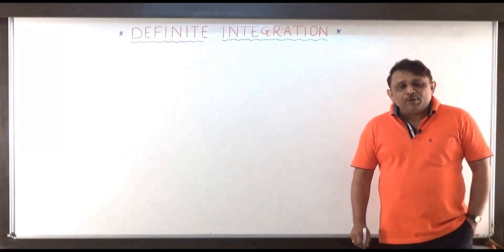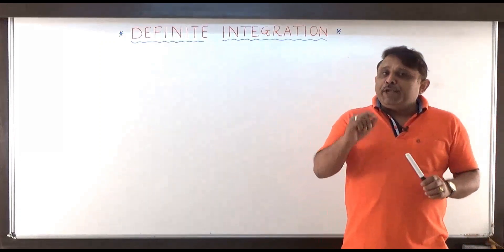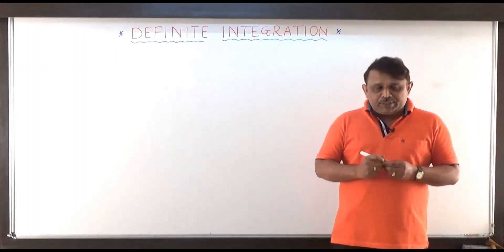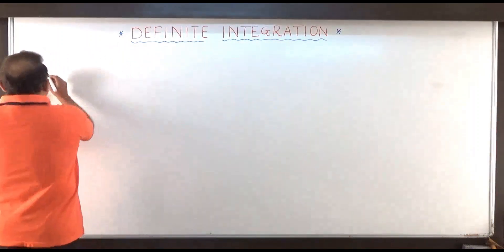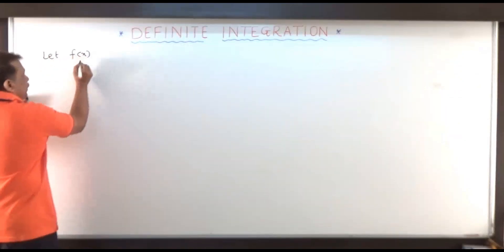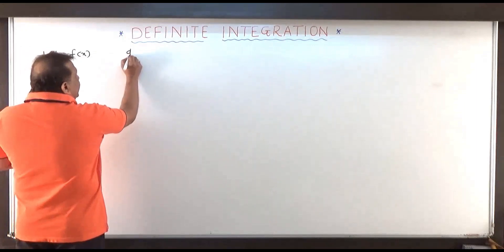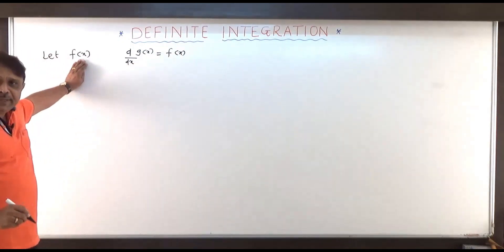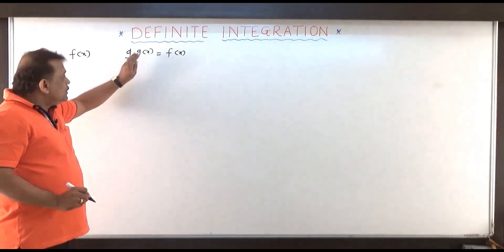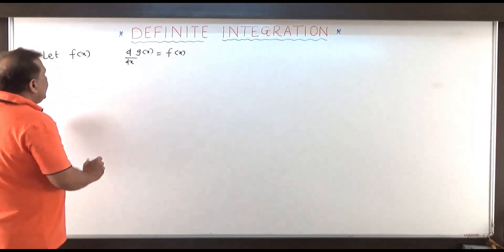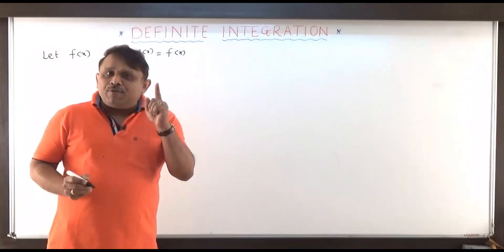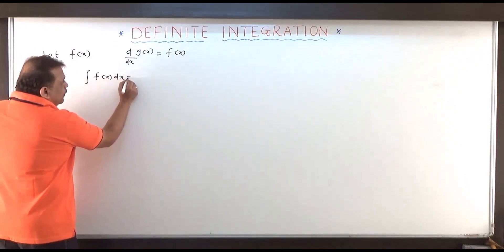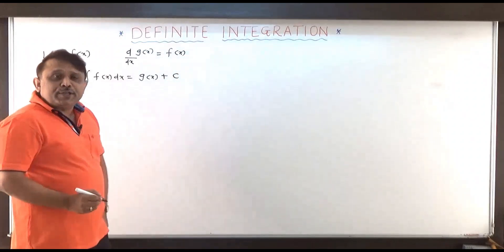Let's start with the new chapter known as definite integration. Before going into that, let us recall the definition of indefinite integration. Suppose y equal to f of x, or say f of x, be a function such that derivative of g of x with respect to x is f of x. Then g of x is called the integral of f of x with respect to x, and we denote it by integral f of x dx equal to g of x plus c, constant of integration.